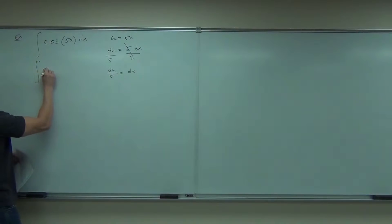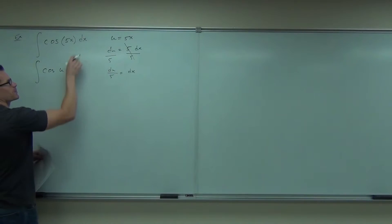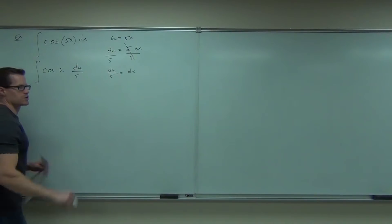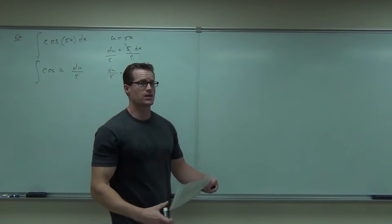That lets us make our substitution. So the cosine doesn't change, but the 5x I'm going to let that become u. And I'm going to let dx become du over 5.